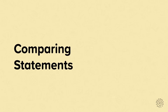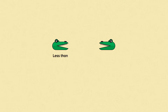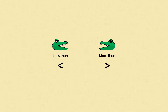Comparing statements. Charlie the crocodile is very greedy and always wants to eat the larger value. This means the left hand side is less than the right hand side, and we use this symbol to show that. This means the left hand side is more than the right hand side, and we use this symbol to show that. This symbol means both sides are equal.